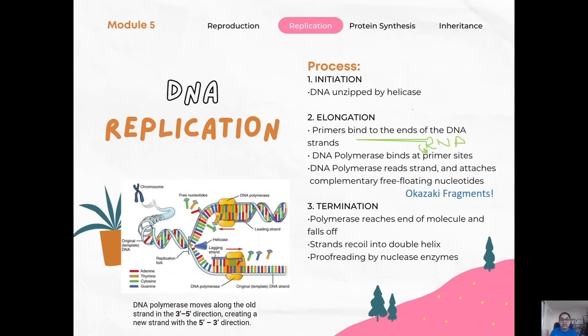Termination occurs when polymerase reaches the end of the molecule and falls off. The Okazaki fragments are then filled in, and the strand recoils into a double helix. Proofreading also occurs via nuclease enzymes to detect and correct mistakes. This process is important to understand when we later look at mutations and how they can affect the DNA and genome.